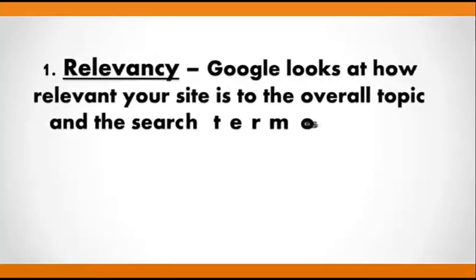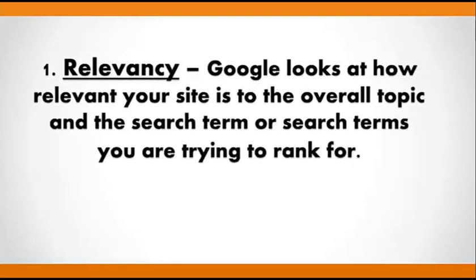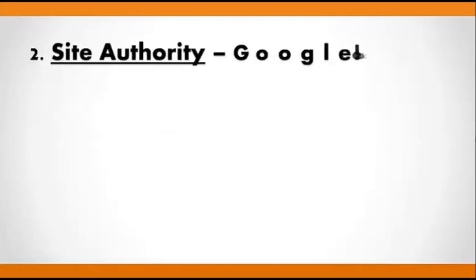One is relevancy. Google looks at how relevant your site is to the overall topic and the search term or search terms you're trying to rank for. It's not good enough just to be ranking for one keyword anymore — you've got to cover a bit more of a broad topic, and it has to be extremely relevant to that topic.